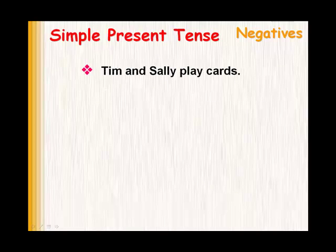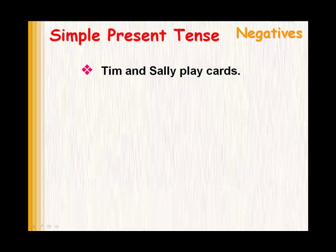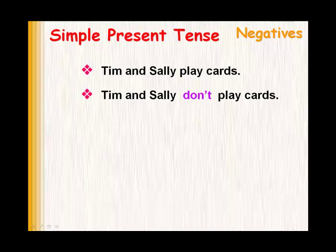Another example: Tim and Sally play cards. If we had to do the negative, we would say Tim and Sally don't play cards. We use don't before the main verb, and we use don't because Tim and Sally are plural — it's two people.